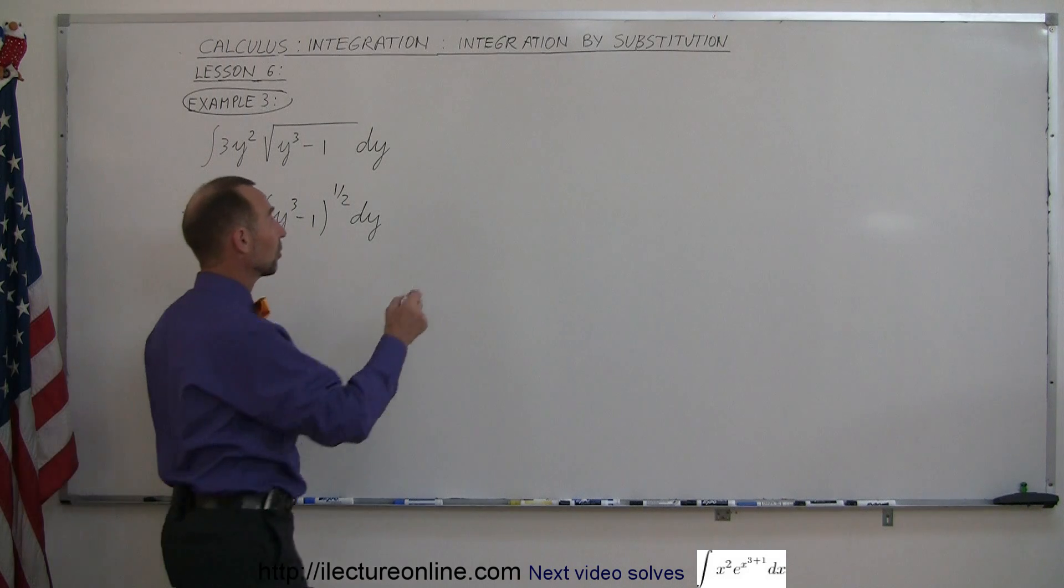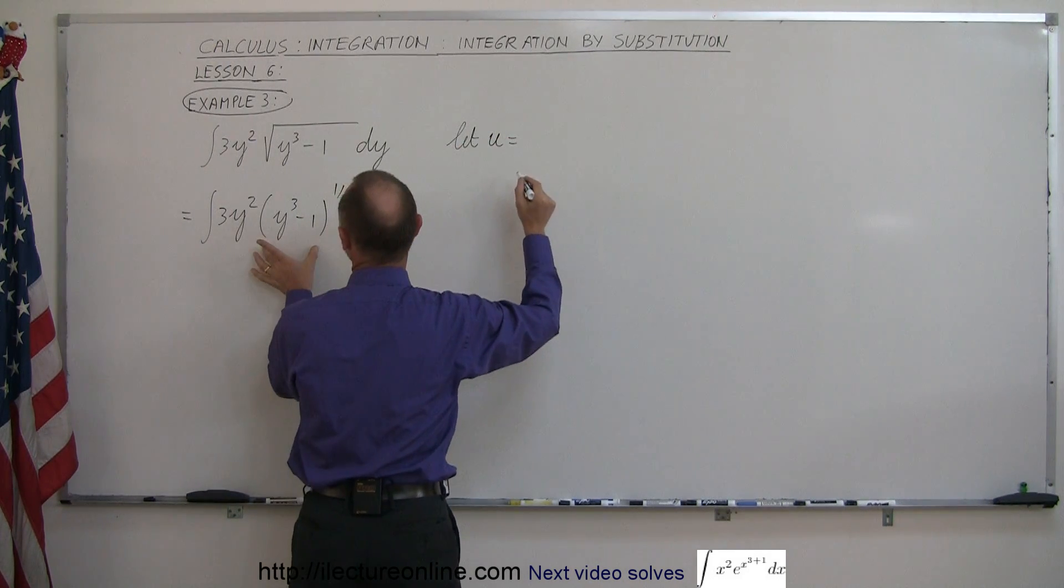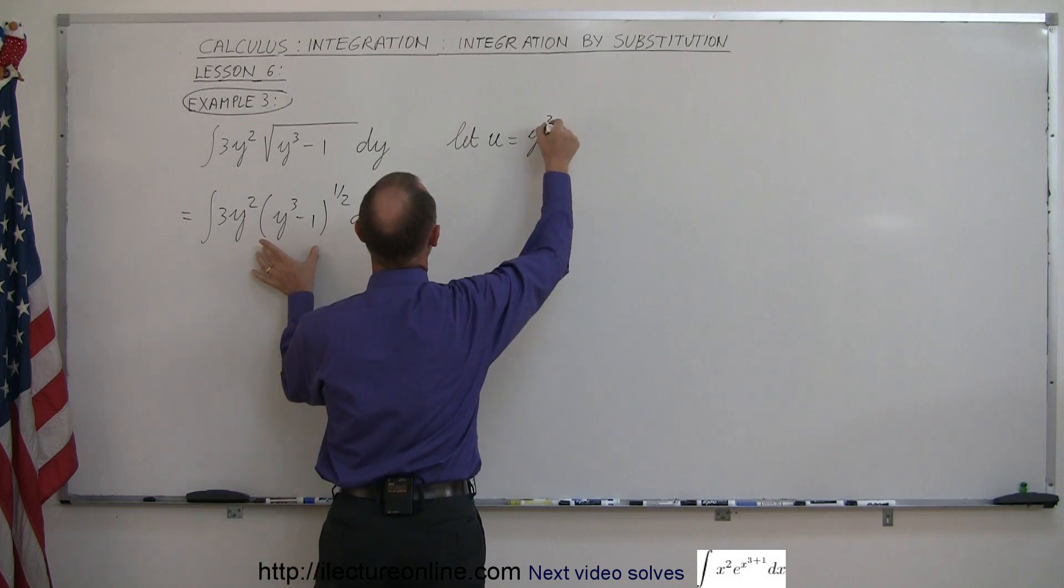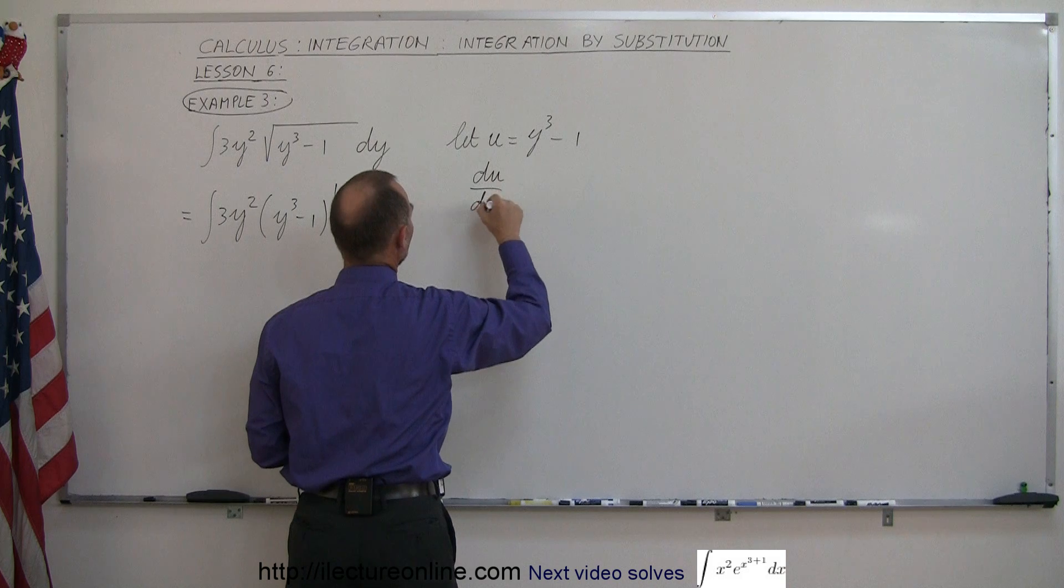So we're going to use a substitution. Let u equal what's inside the parentheses which is y cubed minus 1 and then the derivative of that with respect to x.